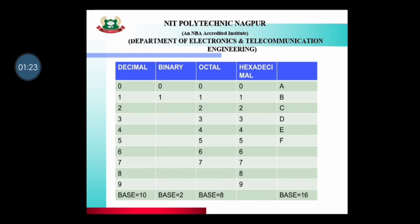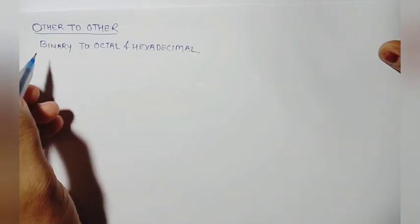Today's topic — we will start to see how the base represents all the numbers. Decimal number system is 10, binary number system is 2, octal number system is 8, and hexadecimal number system is 16. Now what we are going to be talking about is other to other system.